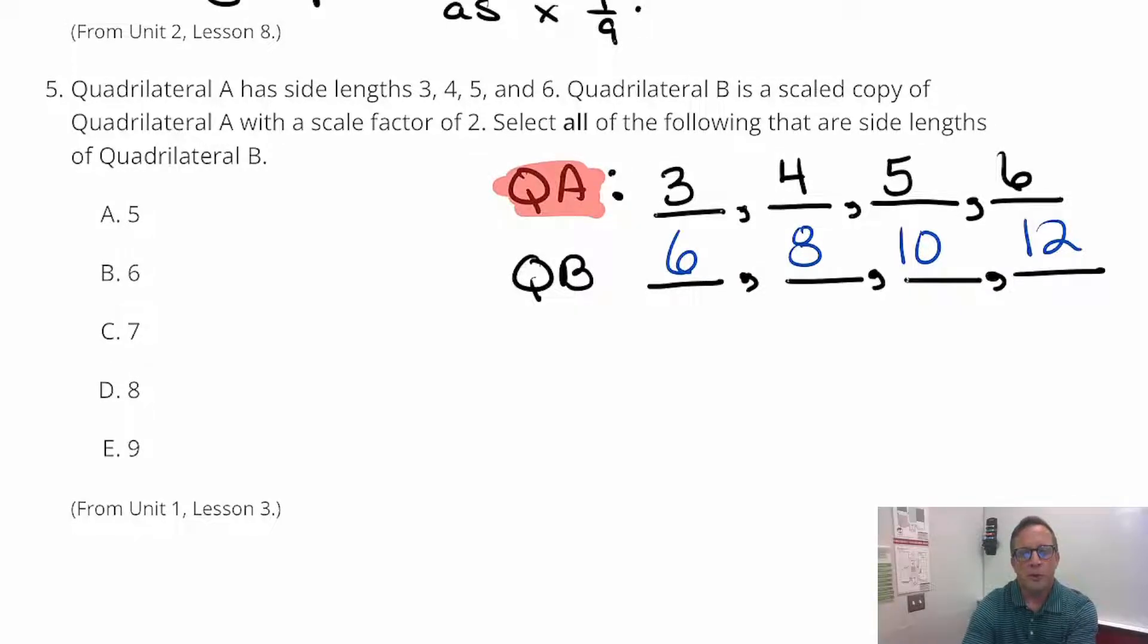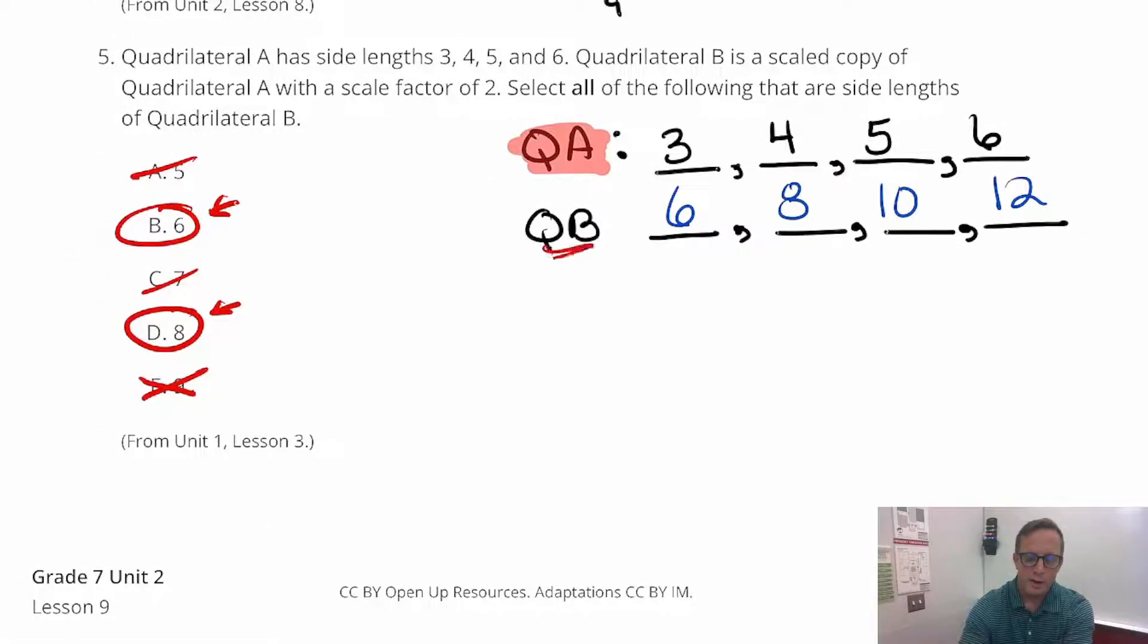It becomes 12 right there. And so I'm going to look for 6, 8, 10, or 12. So there. That is not it. That is. That's a side length. 7 is not a choice. 8 is. 9 is not. And so, yeah. There it is. You got 6 and 8 were both possible side lengths of quadrilateral B.